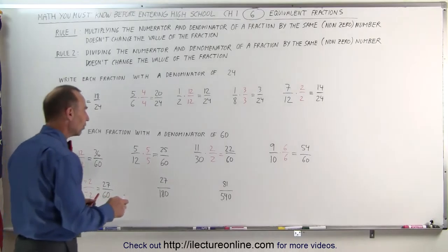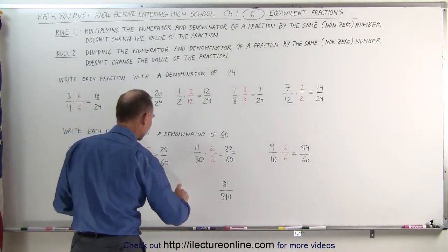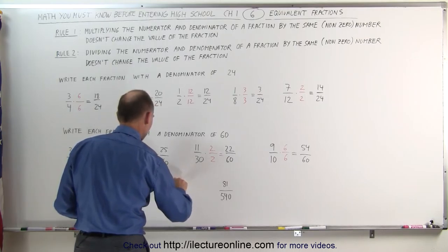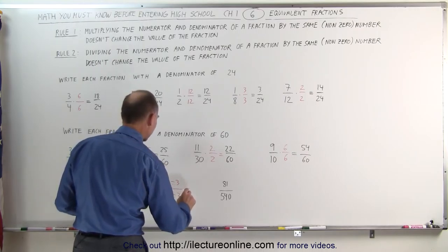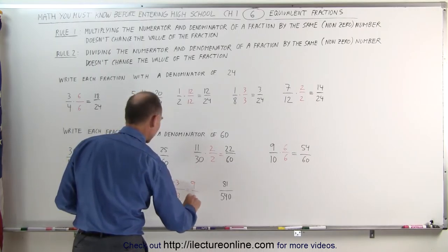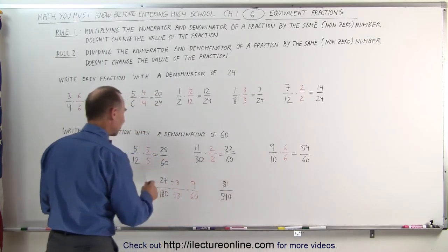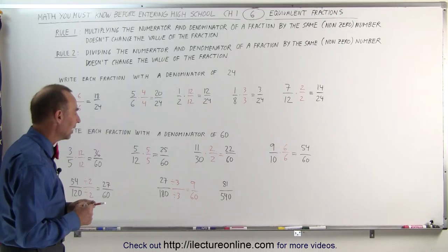Here, I notice that if I divide the numerator and the denominator by 3 — divide by 3 and divide by 3 — then what I get is 27 divided by 3 is 9, and 180 divided by 3 is 60. So 9 divided by 60 is equivalent to 27 divided by 180.